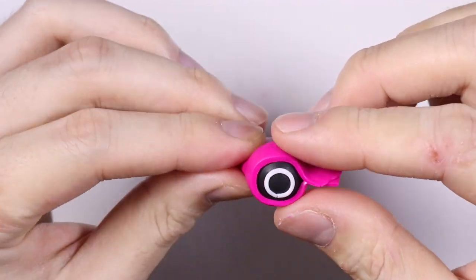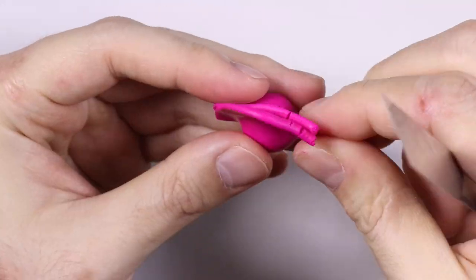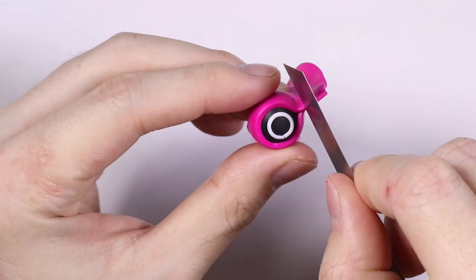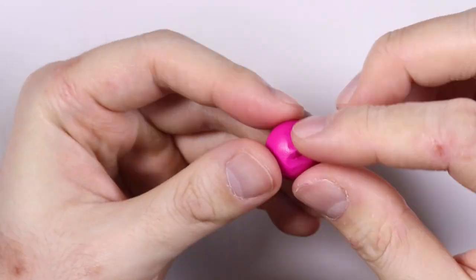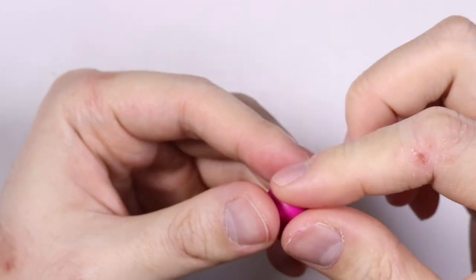And after wrapping it around, I'm just going to cut off the excess clay. And using my fingers, I'm just going to blend in the little seams of the clay to make it nice and smooth.